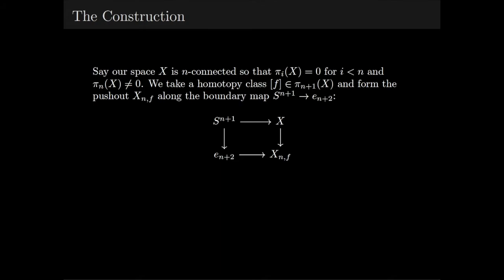The map defined by the pushout then induces a map on π_{n+1}, and under this map, the class f vanishes by construction.